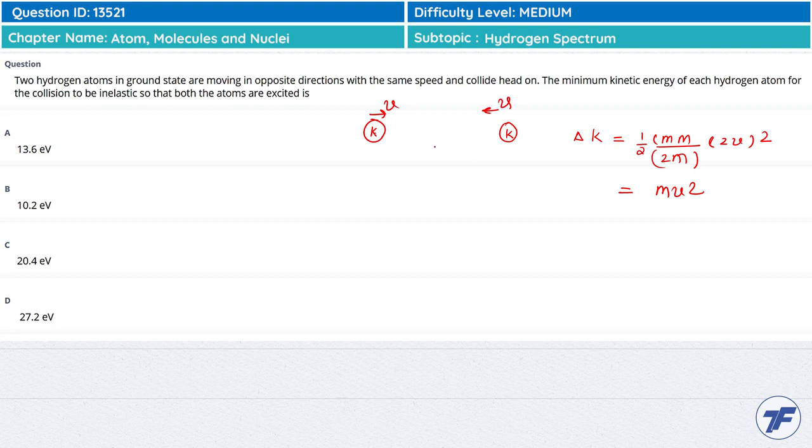When they collide, after collision both come to rest. Since they're coming from ground state to excited state, to excite the first atom and the other one to the second shell, we need 10.4 electron volts. So we need 20.8 electron volts total, which is the loss of kinetic energy.